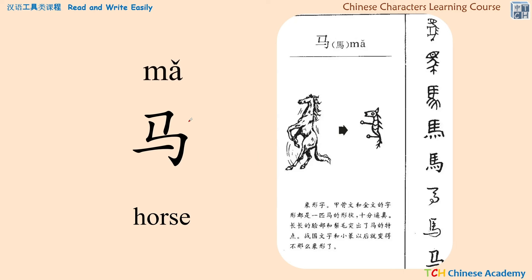So it is pronounced 'mǎ' — the horse. These are the changes over thousands of years. This one is actually the traditional form of this character, and this is the simplified Chinese character for the horse. Let's compare the differences: in the traditional form we have four dots indicating the four feet of the horse, while in the simplified one we simply use a line. The head part is more detailed in traditional, and more simplified in the modern form. So 'mǎ' — the horse.